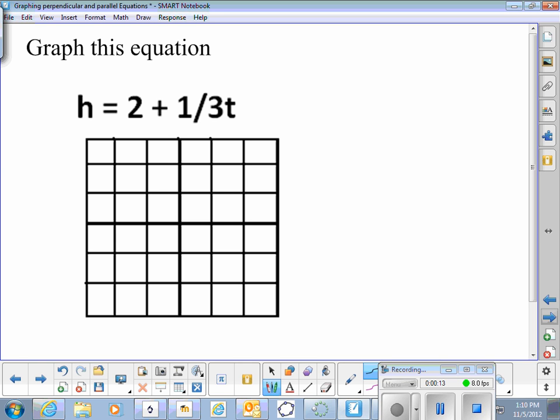So we could graph h equals two plus one-third t. If we have our t along here we say maybe this would be one and each square will be one for the height for the h. h will be that axis.